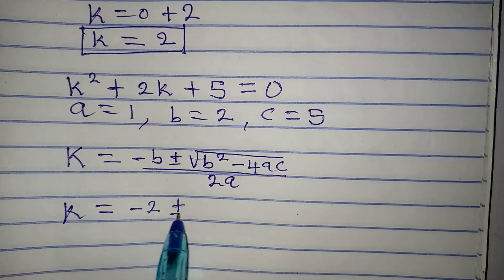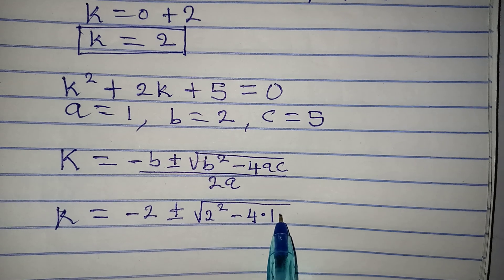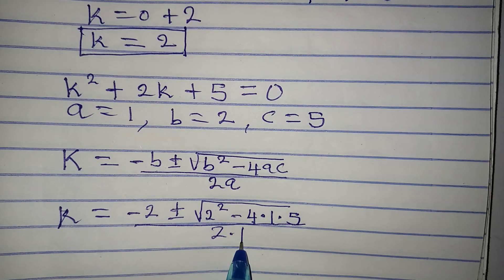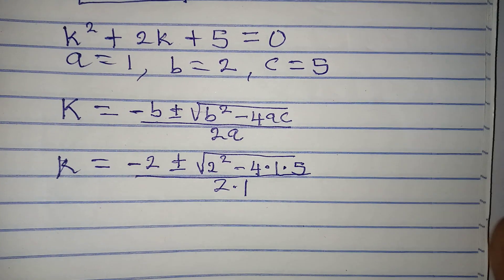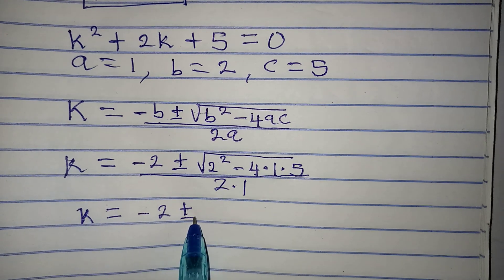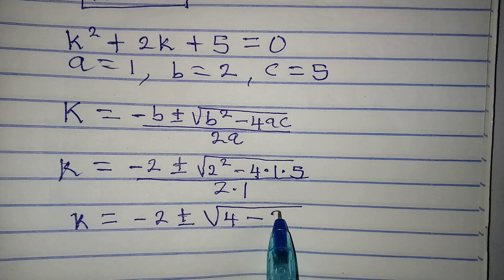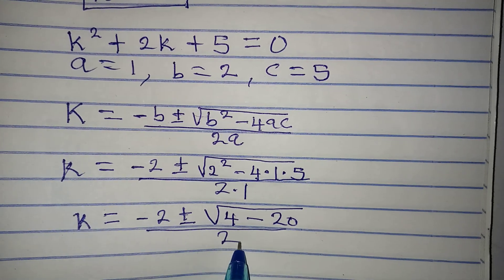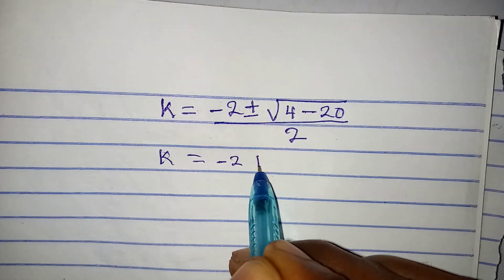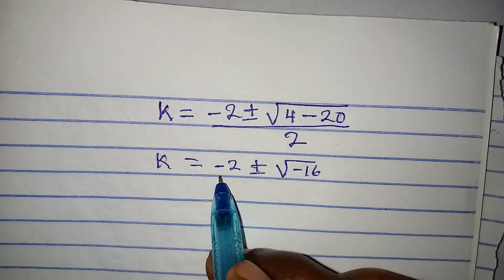Substituting: k equals minus 2 plus or minus the square root of 2² minus 4 times 1 times 5, divided by 2 times 1. The square of 2 is 4, minus 4 times 1 times 5 gives minus 20, so we have the square root of negative 16, all over 2.